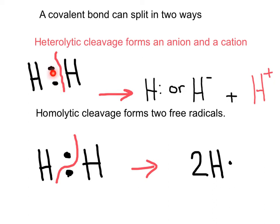We have a single bond where two electrons are being shared evenly. We can have a heterolytic cleavage. That means that one of the two hydrogens is taking both of the electrons to form an anion, that is a negative charge due to the two electrons, and a cation.